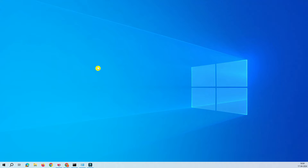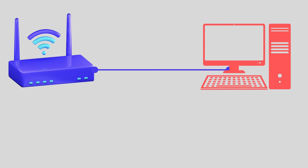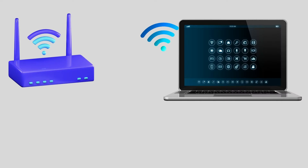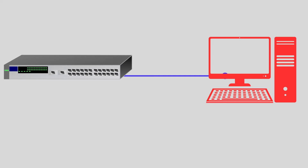Before we configure the DIR-615 into access point mode, your router should be connected to the PC directly through the Ethernet cable, or you should have connectivity through Wi-Fi, or you should have connectivity through the LAN.